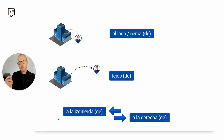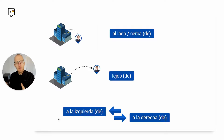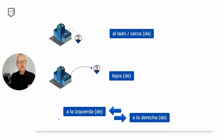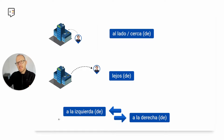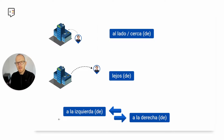This preposition de is used every time we refer to a place. For example: está cerca del centro comercial — it's near the mall — or está lejos de la tienda de ropa. So cerca means close and lejos means far away. Also, it can be a la izquierda or a la derecha de — to the left or to the right of a certain place.